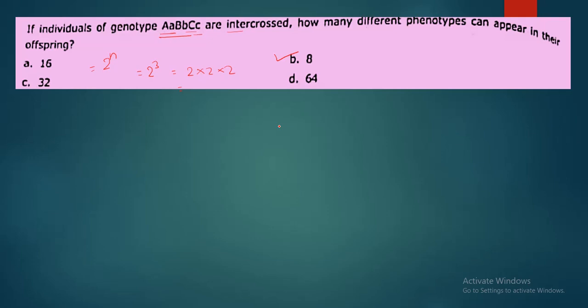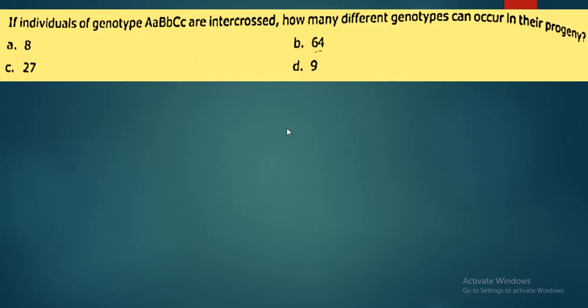So using this simple method, you can solve these problems. Remember these formulas, which will help you calculate possible progenies, possible genotypes, phenotypes, and gametes. Let's look at one more example with genotypes.